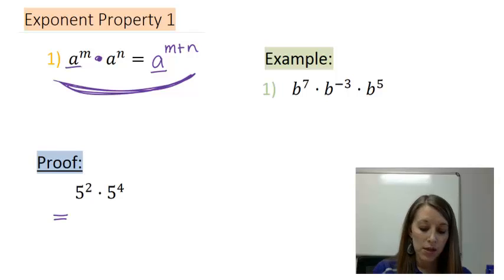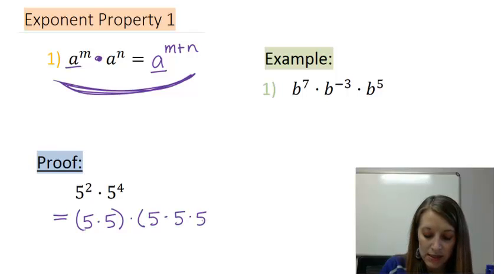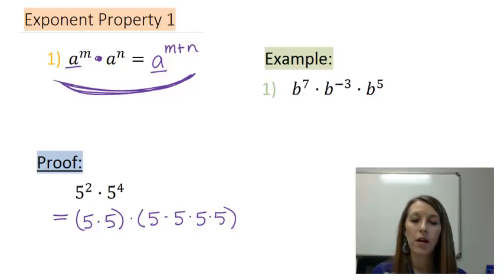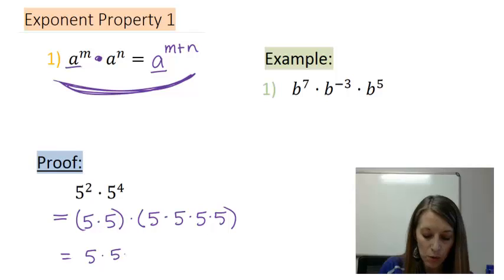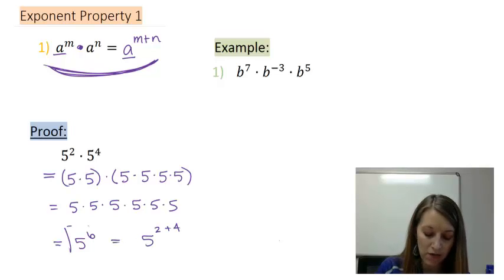But I need to prove to you why these properties work in the first place so you can trust me when you're going to use them. So five squared is five times five, and five to the fourth is five times itself four times. Now we learned that multiplication is commutative and associative, so it doesn't matter what order I multiply all of these fives together. That means I can really just multiply all of these fives together at the exact same time.